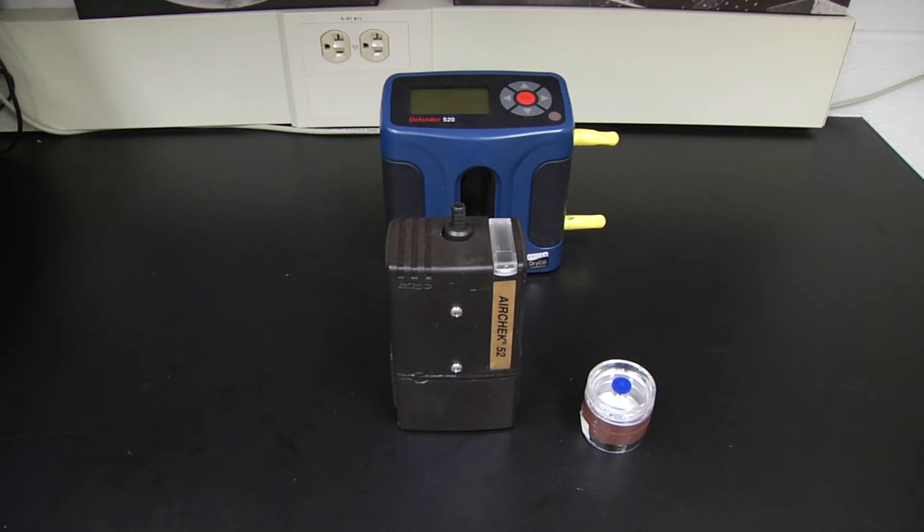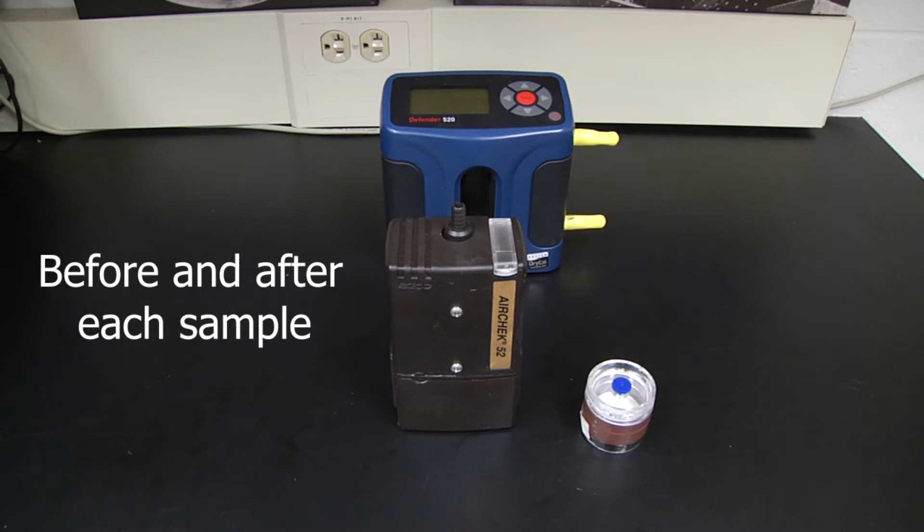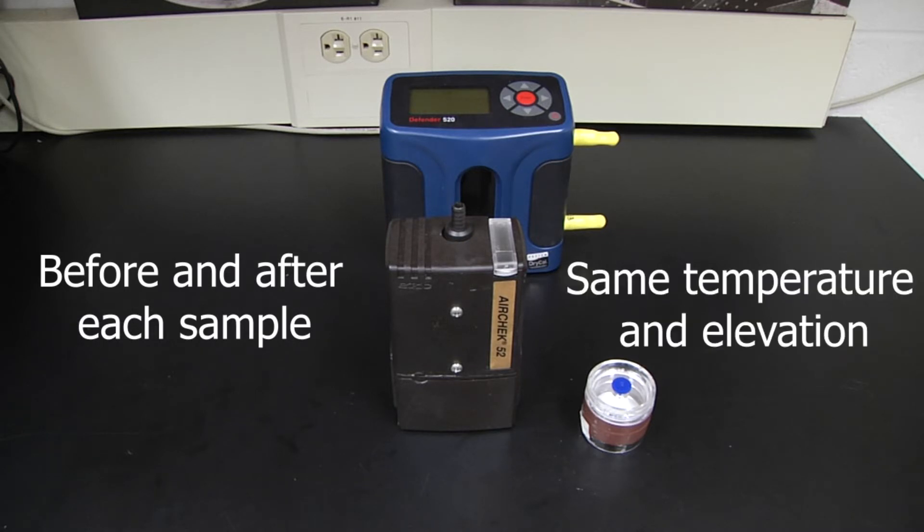Air sampling pumps need to be calibrated directly before and after each sample in order to accurately calculate the volume of air that's been sampled. You should also calibrate your pumps at a temperature and elevation or pressure that's as similar as possible to your sampling location.